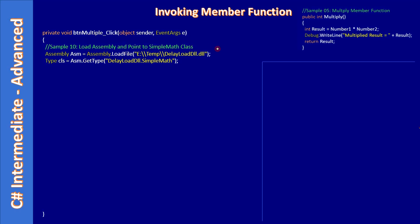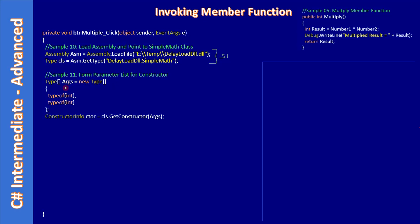In the button click handler, the first two steps are the same as previously — we load the DLL at runtime and store the assembly, then we get the type so we have SimpleMath in hand. Last time we created the array and populated members one by one using the indexing operator. Here we are creating the array and initializing it — type array new type — populating the array in the same declaration.